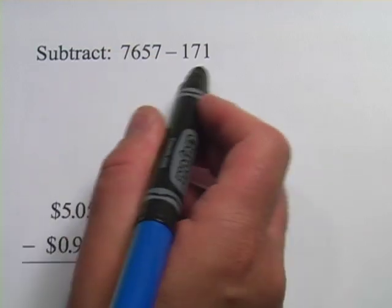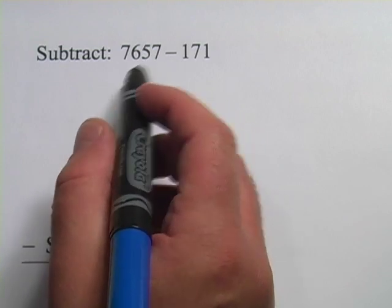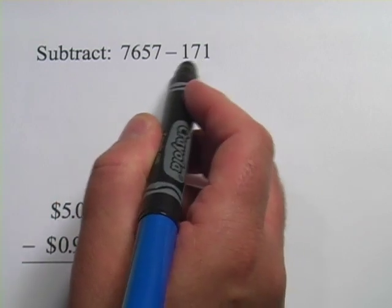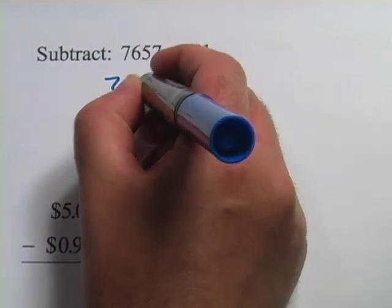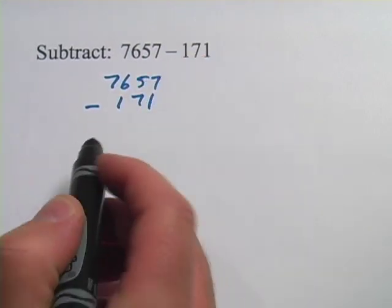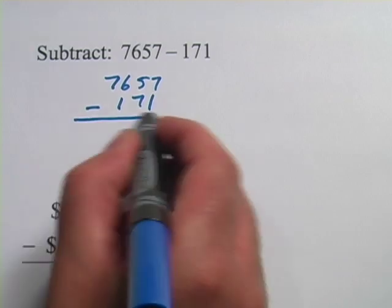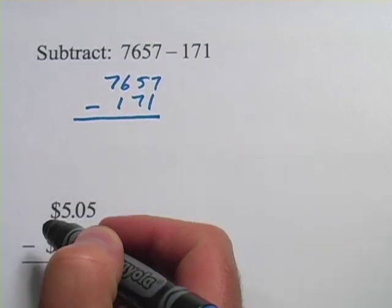So let's go ahead and do this. You'll remember that we set this up by stacking them on top of each other with the number that you're subtracting on the bottom and the number you're subtracting from on the top. So we'll write it like this, 7,657 minus 171, as long as I have these lined up correctly so that the ones, the tens, the hundreds are in the same place, we're good to go.